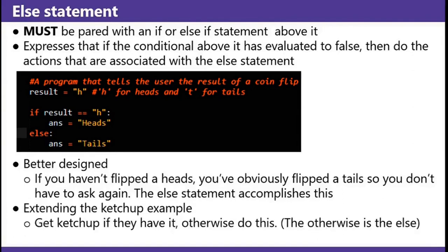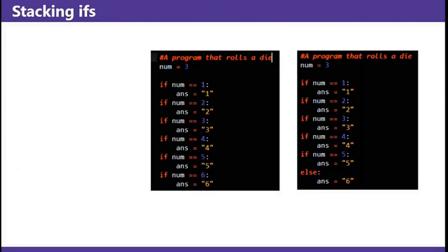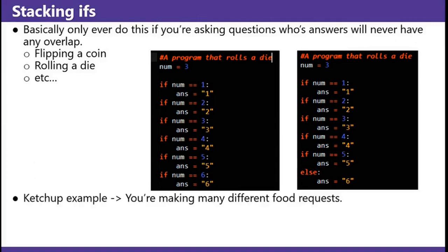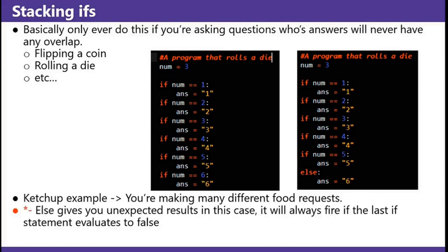Extending the ketchup example: get ketchup if they have it; otherwise, do this — the 'otherwise' is the else. Stacking ifs: these are two programs that say if the number equals the numeric value, the answer equals the string version of that number. Basically, only ever do this if you're asking questions whose answers will never have any overlap, like flipping a coin, rolling a die, etc. In the ketchup example, you're making many different food requests: if the store has ketchup, if the store has mustard, if the store has relish, and so on. The else in the right program gives you unexpected results — it will always fire if the statement evaluates to false.